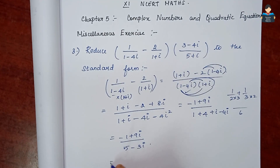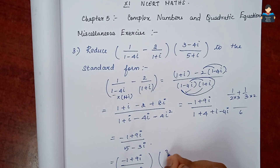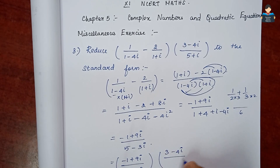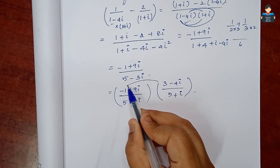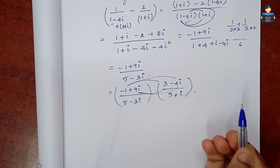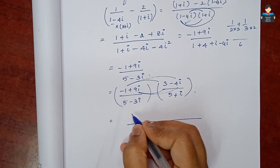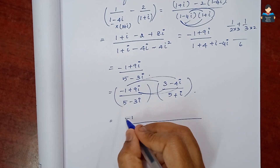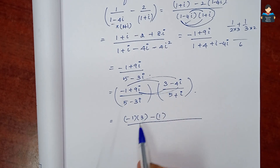So we have (−1 + 9i)/(5 − 3i). Multiply by (3 − 4i)/(5 + i). Performing normal multiplication again: numerator part — (−1) into 3, so minus 1 into 3.